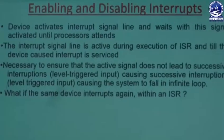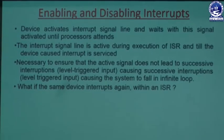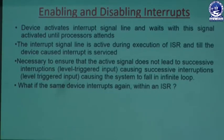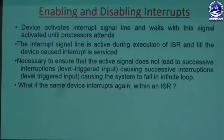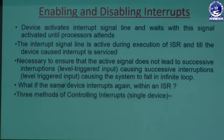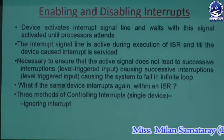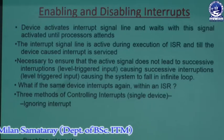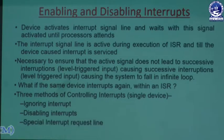What if the same device interrupts again with an ISR in progress? If a device that previously requested an interrupt requests another interrupt during execution of that ISR, there are three methods the processor uses to deal with this. The three methods are: ignoring the interrupt, disabling the interrupt, and using a special interrupt request line.